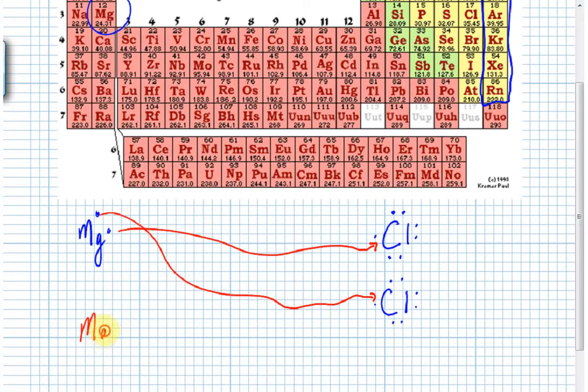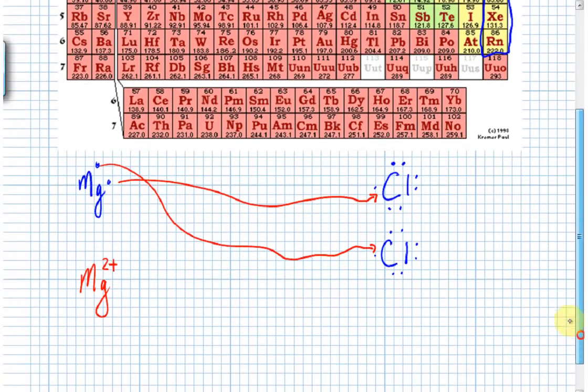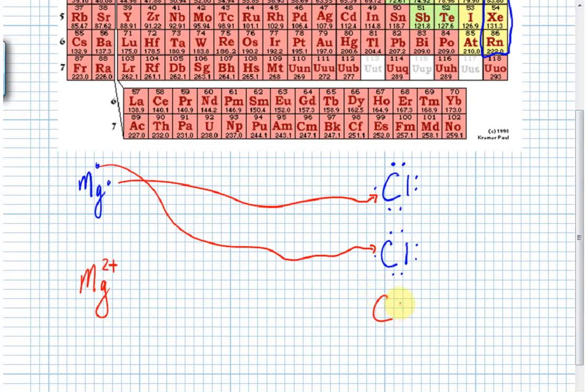In the process of doing that, a neat transformation happens. The magnesium atom loses its two valence electrons, becomes a magnesium ion with a plus two charge. Notice that we chemists have a tendency to put the magnitude of the charge first and the sign of the charge second. Each chlorine picking up an electron becomes a chloride ion with a negative charge.